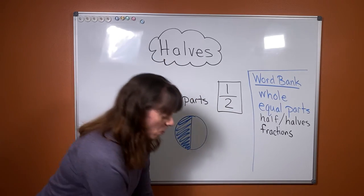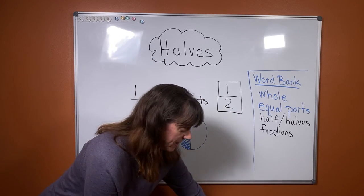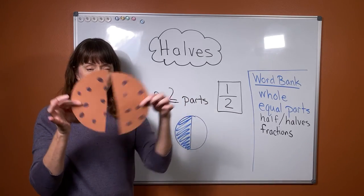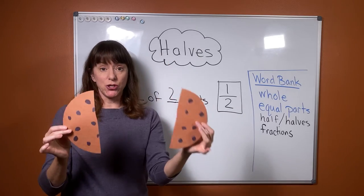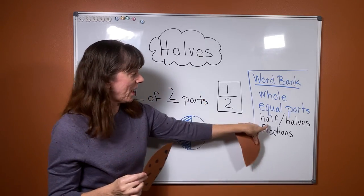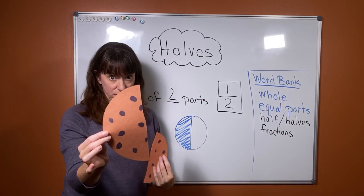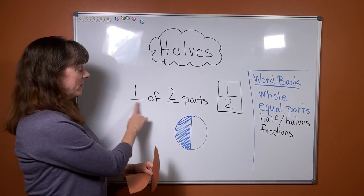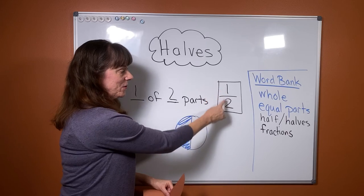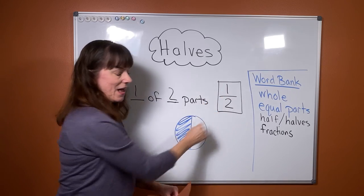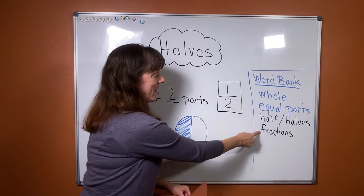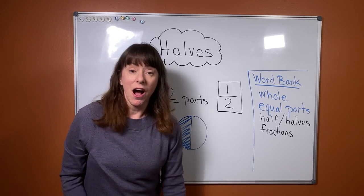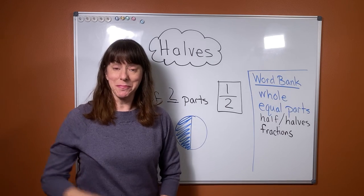Okay, so today we learned and expanded on our equal parts. We know what a whole is. We know what equal parts are. If it's two equal parts they are halves. One of those two equal parts is a half. We can say one of two parts. We could write it this way: one half, one of two parts. And what we're working on is really fractions. I will see you next time. Bye.